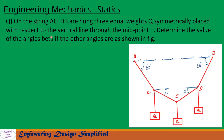Today's problem is: on the string ACEDB are hung three equal weights Q, symmetrically placed with respect to the vertical line through the midpoint E. Determine the value of the angles beta if the other angles are as shown in the figure.